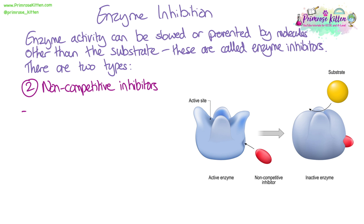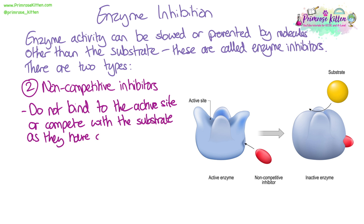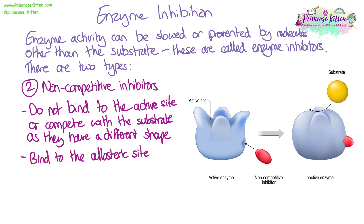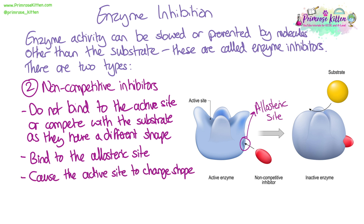Non-competitive inhibitors. These do not bind to the active site, and they also don't compete with the substrate for the active site because they have a different shape. They bind away from the active site at a site known as the allosteric site. They cause the active site to change shape, so the active site is no longer complementary to the substrate and no enzyme-substrate complexes can form.